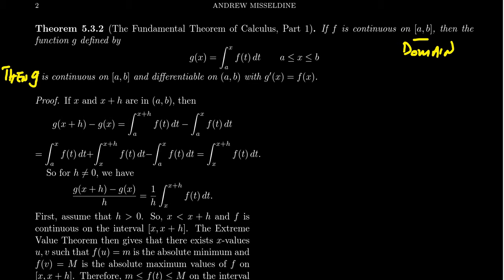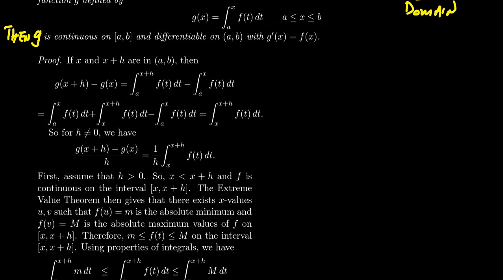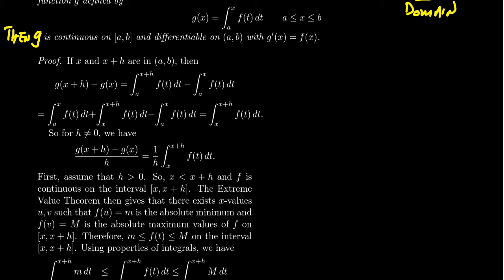This function defined using integrals is continuous on its domain a to b, and it'll be differentiable on the open domain a to b. We can't necessarily guarantee differentiability at the endpoints, because there could be vertical tangents or similar issues. But the derivative of g is going to equal f of x — the integrand of this function. The proof of the Fundamental Theorem of Calculus is actually a fun exercise, because it's sort of like a reunion episode where every important result — some of those I mentioned earlier — will pop up in this proof. It's the who's who of the calculus world.